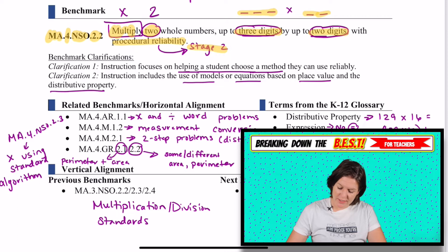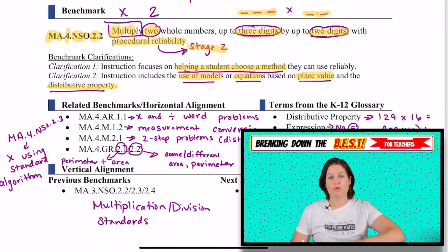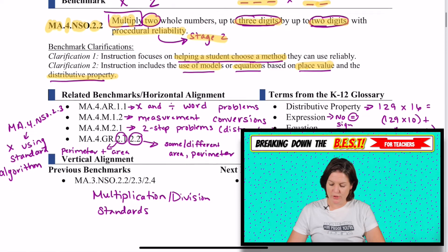It says here for clarifications, the instruction focuses on helping a student choose a method. That's what this whole procedural reliability thing means. We're going to use models or equations based on place value and using the distributive property, which is related to the area models and the partial products models that we'll go through in just a little bit.